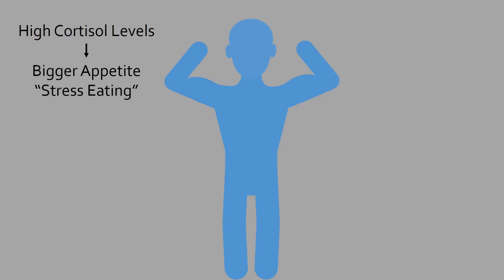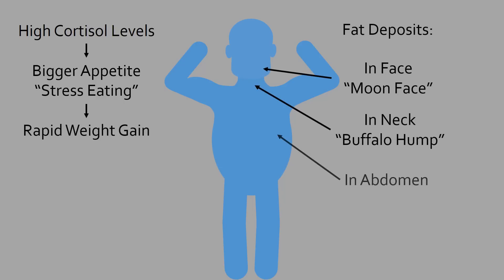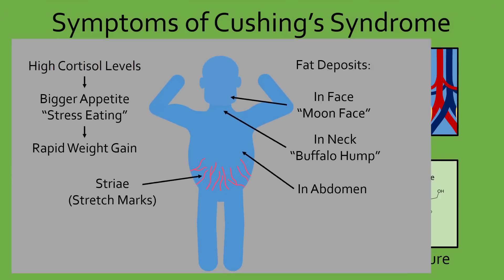Therefore, since the energy stores were never used up, increased appetite and eating causes rapid weight gain on the face, neck, and stomach. Not only can this rapid weight gain result in stretch marks on the belly, called striae, when the blood vessels near the skin stretch and burst, it can also lead to diabetes, which can eventually cause death.